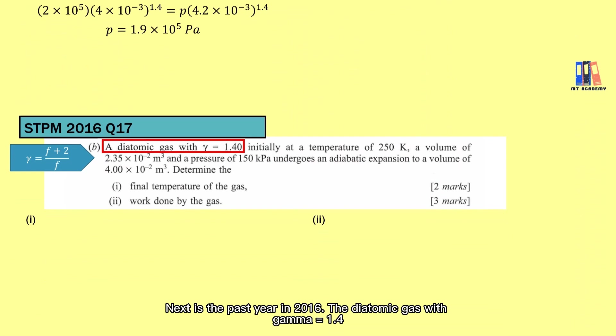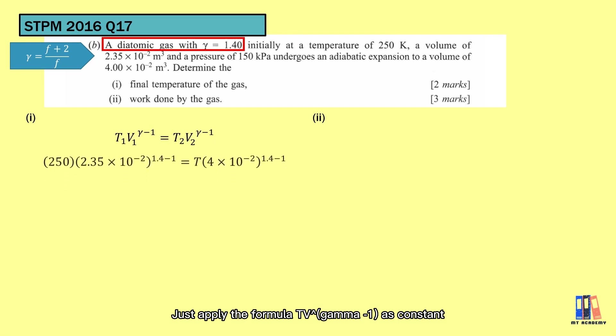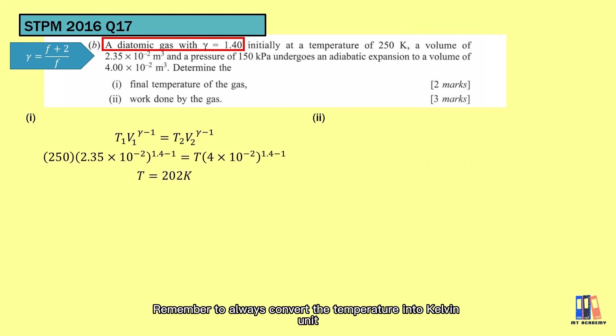Next is a past year from 2016. The diatomic gas with gamma 1.4. From here, you should be able to see that the value of gamma is unique for each type of molecule, which depends on the number of degrees of freedom. This time, the question asks for the temperature. Just apply the formula TV to the power of gamma minus 1 as constant. Remember to always convert the temperature into Kelvin unit. Final temperature is 202 Kelvin.